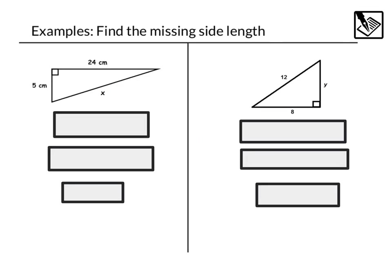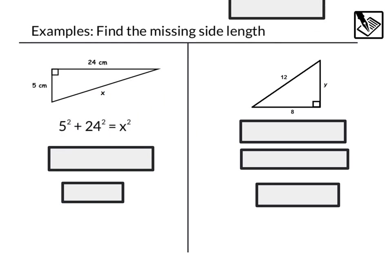Let's do a couple examples where we find the missing side length of a triangle. Here we have a right triangle with legs 5 and 24, and the hypotenuse is x. We can set up the equation a squared — 5 squared — plus b squared — 24 squared — equals our hypotenuse squared, x squared.